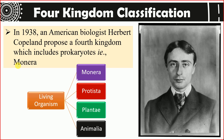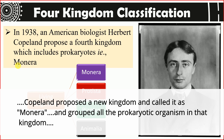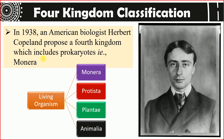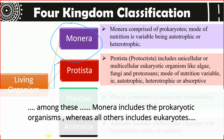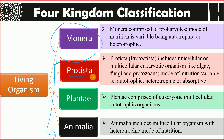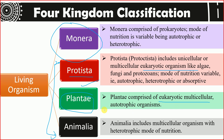With this knowledge of two different cell types, the American biologist Herbert Copeland proposed a new kingdom known as Monera for prokaryotic organisms. This gave rise to the four kingdom classification system, with the kingdoms: Monera, Protista, Plantae, and Animalia. Prokaryotes are in Monera; Protista includes unicellular eukaryotes; Plantae includes multicellular autotrophic eukaryotes; and Animalia includes multicellular heterotrophic organisms.